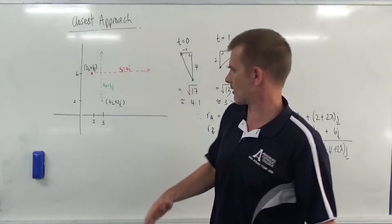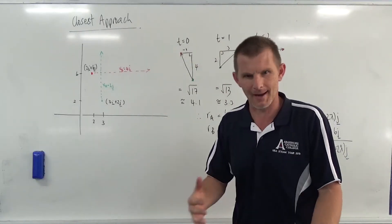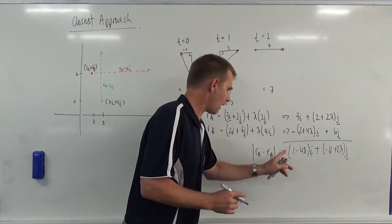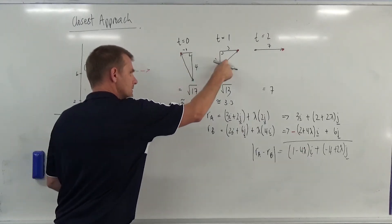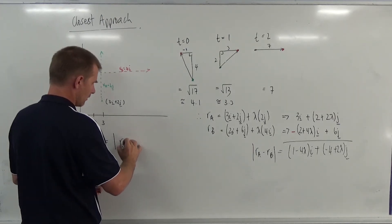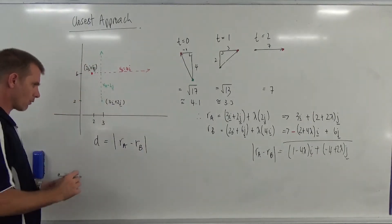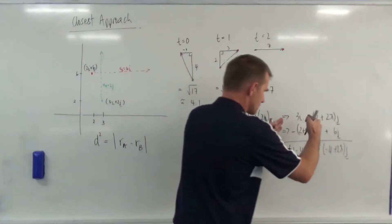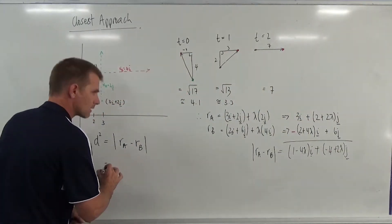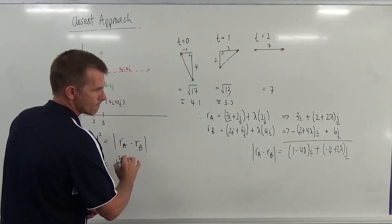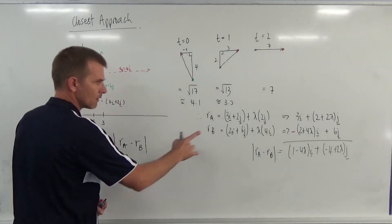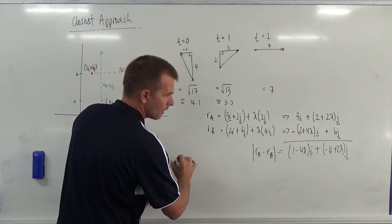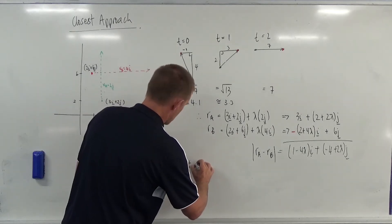This is the first video I've done some editing on - I felt I left you hanging a bit, so I'm going to actually work this through. d squared equals the absolute value of rA minus rB, squared. Squaring the components: (1 - 4t) squared gives 1 - 8t + 16t squared; and (-4 + 2t) squared gives 16 - 16t + 4t squared. Combining those: d squared equals 20t squared minus 24t plus 17.